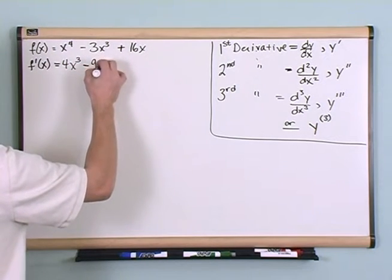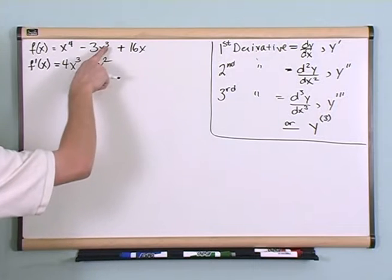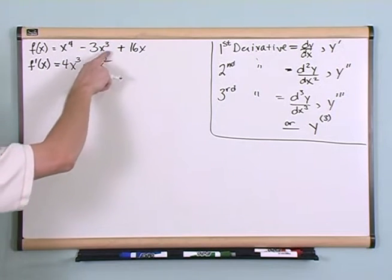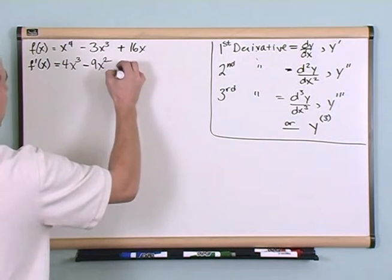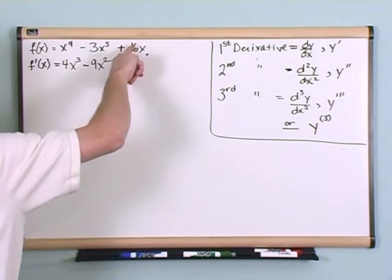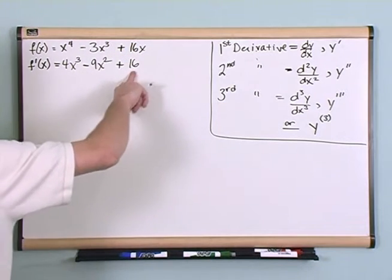Minus 9x squared. The reason it's 9 is the 3 comes out of the exponent, 3 times 3 is 9, and the exponent is 3 minus 1. And then over here, you're just left with 16, because 1 comes out of the exponent, 16 times 1 is simply 16.